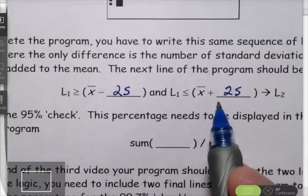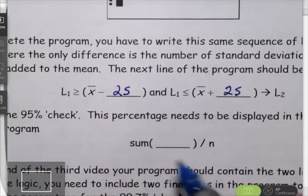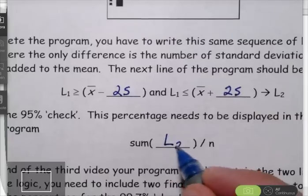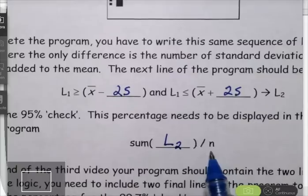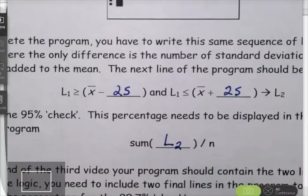So this is again going to store a sequence of ones and zeros into list two. So the sum of that list then divided by n will give me my percentage that we would want to compare to 95%. So this is the logic we need to get into the calculator next. Let's do that.